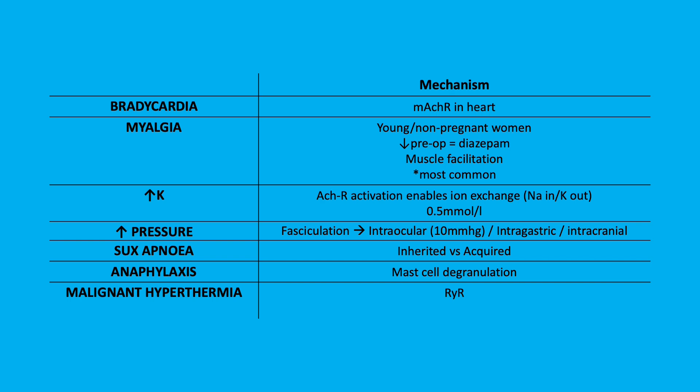Suxamethonium apnea causes prolonged block. This can be inherited or acquired and will be discussed next. Anaphylaxis can occur via mast cell degranulation. Malignant hyperthermia is due to ryanodine receptor pathologies.